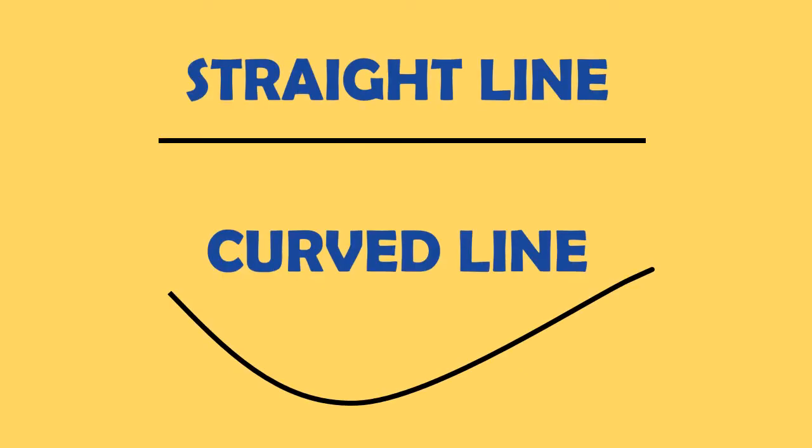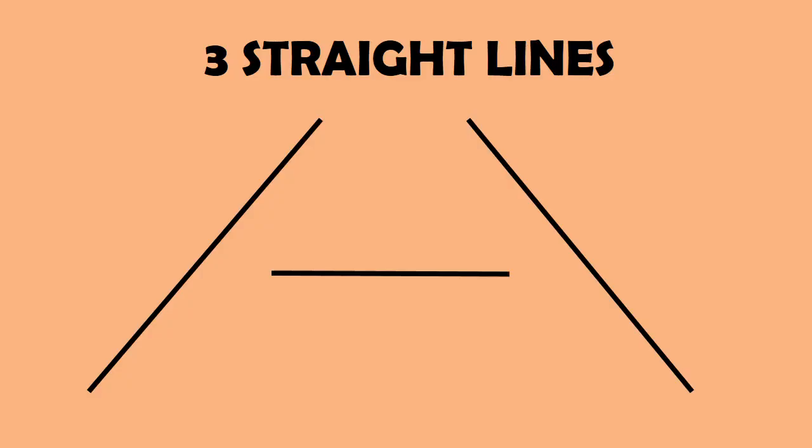Now, let us see some examples of straight line and curved line. Which is this letter, students? Yes, it is A. A is written with the help of three straight lines.